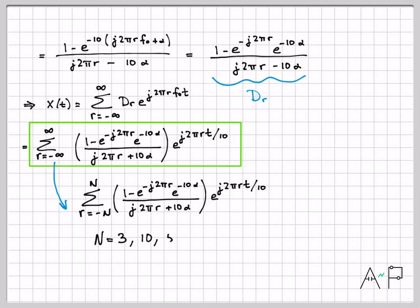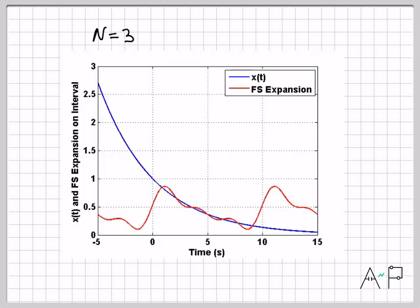And we can take a look at what this time domain signal looks like for these different values of N and how it compares to the original signal, the continuous time signal that we started with. So let's go ahead and do that here.